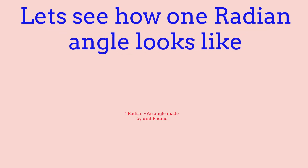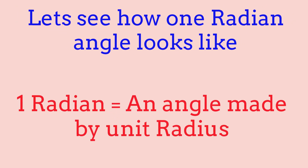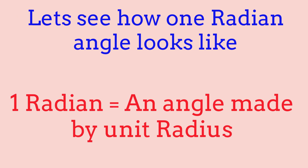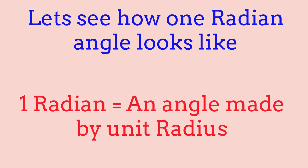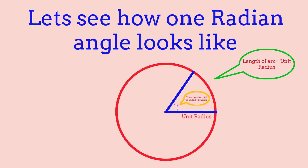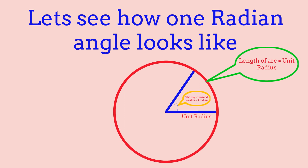Let's quickly talk about how 1 radian looks like. Angle measurements in radians: 1 radian is equal to an angle made by 1 radius. Basically, if we take 1 radius, which is half of the diameter of a circle, and line it up to the circumference of the circle, then that is equal to 1 radian. So 1 radius is equal to 1 radian.